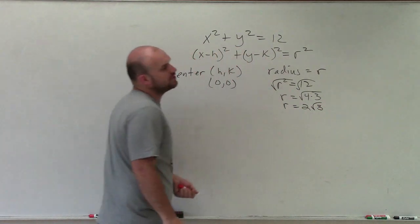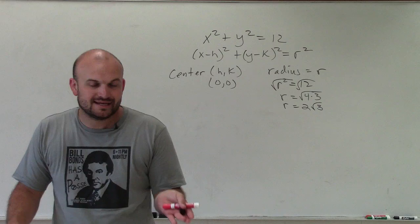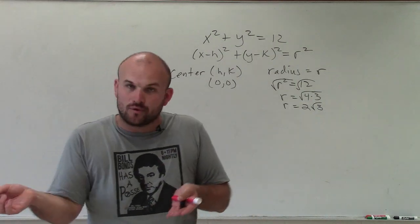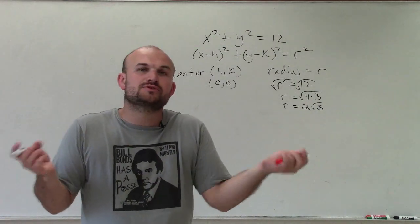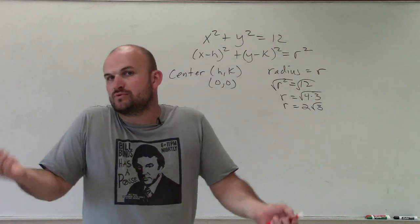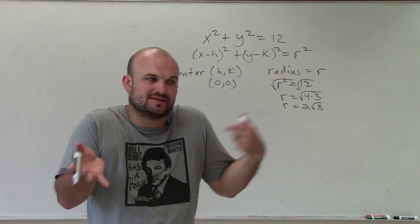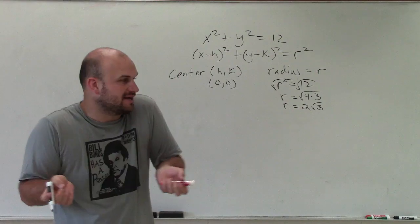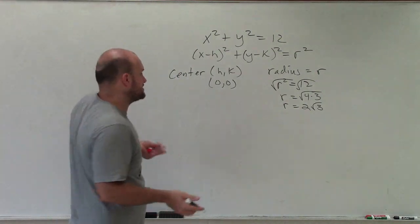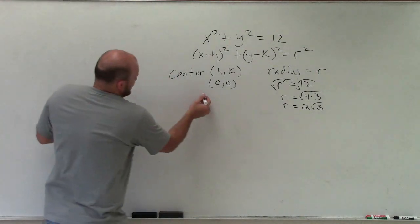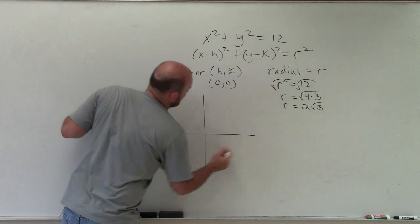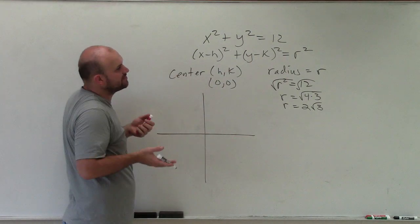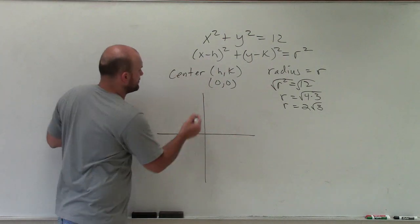Now, square root of 12 — if you just want to estimate it, it's going to be anywhere between 3 and 4, because 3 squared is 9 and 4 squared is 16. So unless you want to use a calculator, I'm not going to be able to get exact. You're going to want to estimate anywhere between 3 and 4.